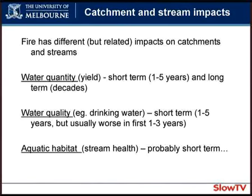Water quality — for example, our drinking water or water for industrial purposes — is a short-term process but it's probably the one exercising catchment managers' minds the most right now. It's usually worst in the first one, two, three years but can keep going a little longer. The combination of those can have an effect on aquatic habitat — the stream health, all the bugs and the flora and fauna in the streams. I'm not going to talk about that too much because it's a rather under-researched component of fire effects in Australia.